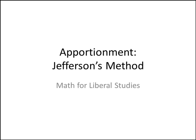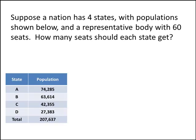In this video, we'll learn how to solve apportionment problems using Jefferson's method. Here's a typical problem: suppose a nation has four states with populations shown below and a representative body with 60 seats. How many seats should each state get? If you haven't watched the introduction video, you should click the link below and watch that now.